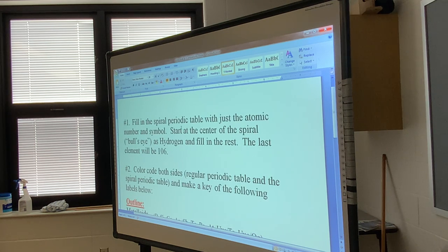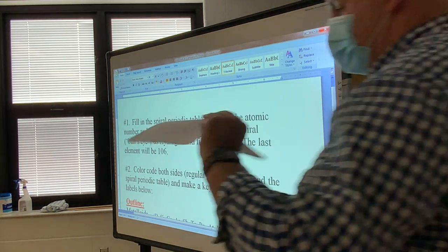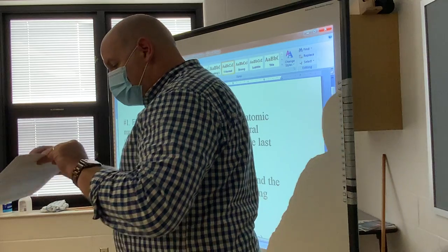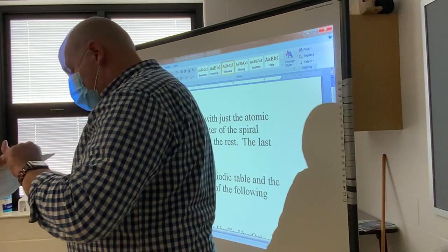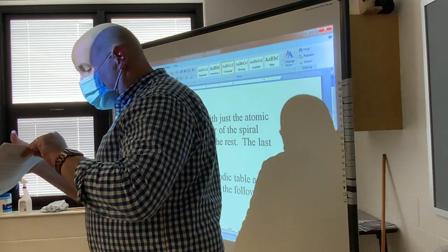So the first part of it is you're going to be taking this periodic table here and you're going to first of all number this. So there's going to be two things you're going to be putting inside there. One is the atomic number. The other one is going to be the symbol.